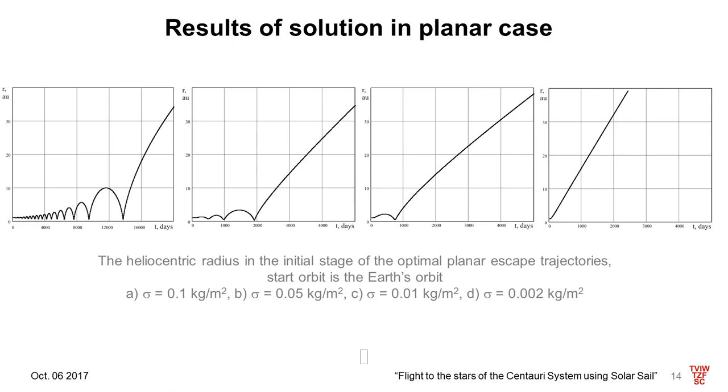This feature of the optimal motion is clearly visible in these figures which show how the distance from the solar sail to sun depends on the time of flight and the value of the mass per area parameter.